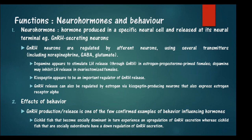A neurohormone is a hormone produced in a specific neural cell and released at its neural terminal — GnRH secreting neurons are an example. The neurons are regulated by afferent neurons using several neurotransmitters including norepinephrine, gamma-aminobutyric acid, and glutamate. Dopamine appears to stimulate LH release but can also inhibit LH release in ovary-removed females. Kisspeptin appears to be an important regulator of GnRH release.